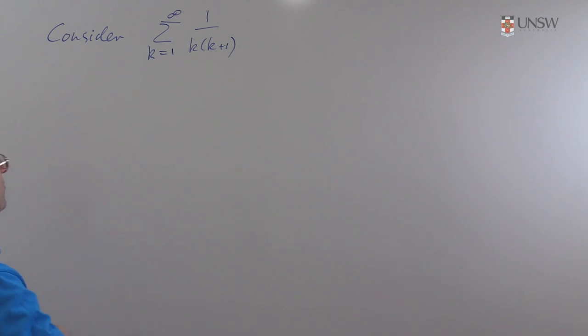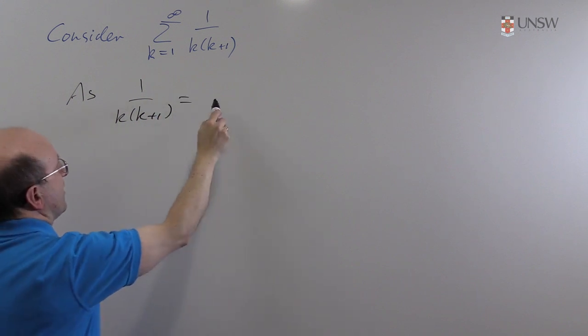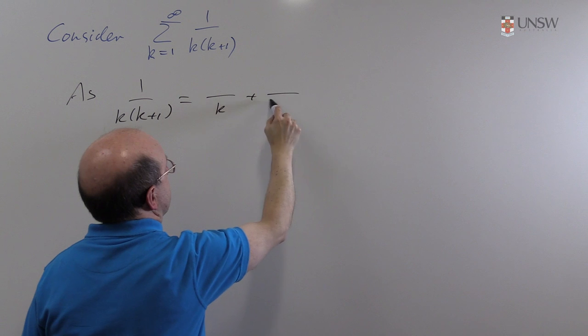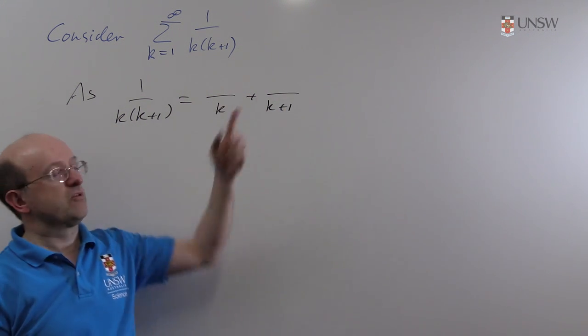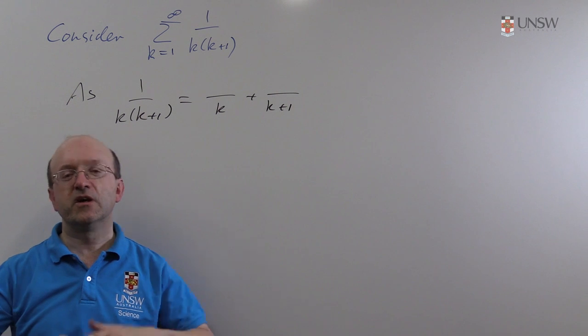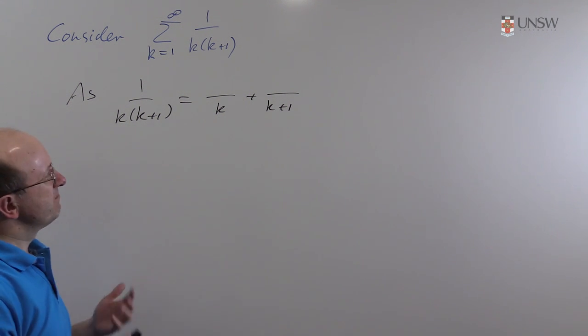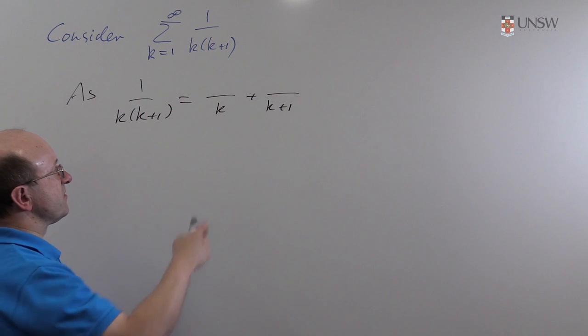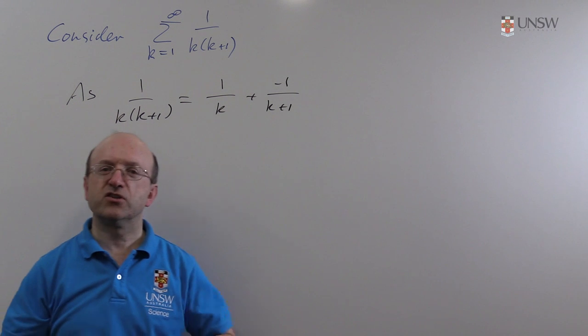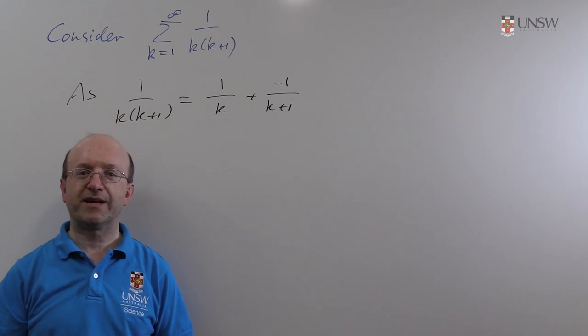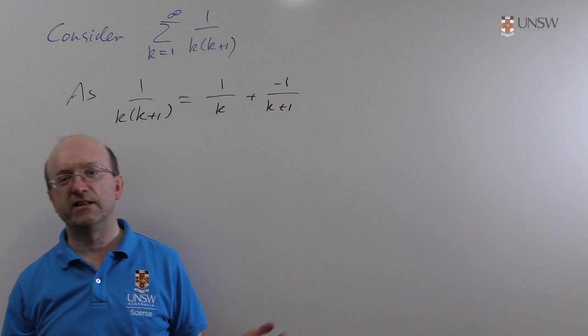So let's have a look at what we get. 1 over k into k plus 1 will be something over k plus something over k plus 1. We could put in unknown constants, cross multiply, substitute and find out what they are. But in this particular example it's not difficult to see that in fact what we want is a 1 here and a minus 1 there. You can check that's correct just by putting everything back over a common denominator.